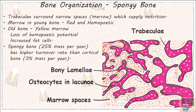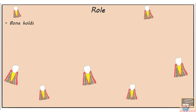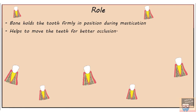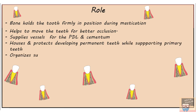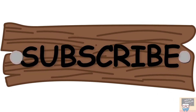Finally, the roles of alveolar bone: it holds the tooth firmly in position during mastication, helps move teeth for better occlusion, supplies vessels for the periodontal ligament and cementum, houses and protects developing permanent teeth while supporting primary teeth, and organizes successive eruptions of primary and permanent teeth. That's all for now — I hope this video on alveolar bone was helpful.